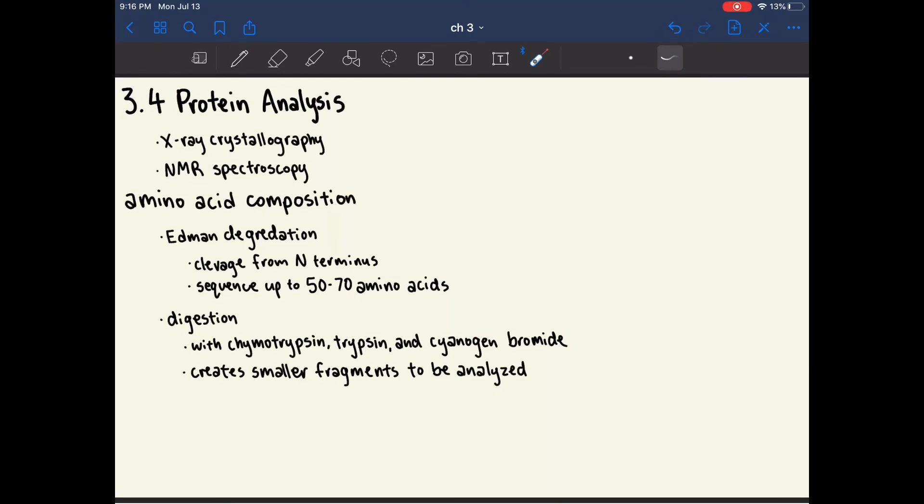Chapter 3.4 is about protein analysis. The most common method of protein analysis is x-ray crystallography. In order for a protein to be analyzed with x-ray crystallography, it must first be isolated using one of the procedures I described previously, and then it must be crystallized. X-ray crystallography is a very common method in order to yield the structure of a particular protein.